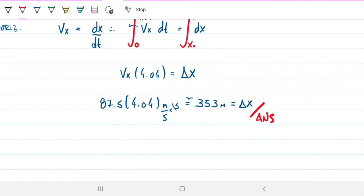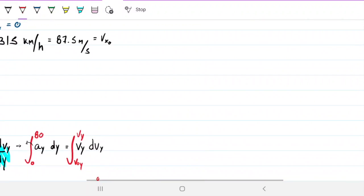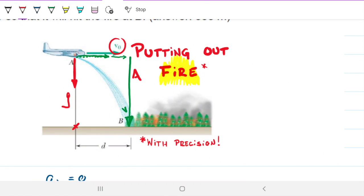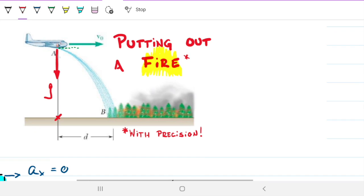That's our answer, but let's think about it. 353 meters means that if I want to do this with precision, if I am 353 meters horizontally away from the beginning of the bushfire and I let go of the water, the water starts falling. It takes about 4.04 seconds to travel from the plane at height 80 all the way down to the ground. But as it's traveling downward, it's also moving forward, traveling forward 353 meters. So as long as I am exactly 353 meters before the bushfire and release the water, I'll start putting out the fire at the beginning.